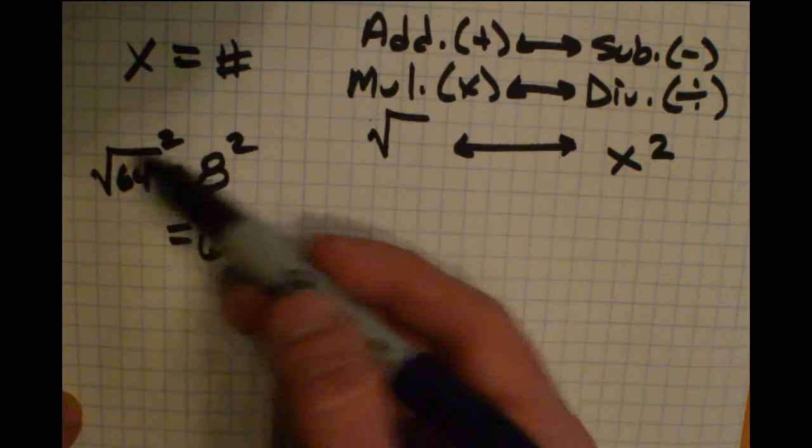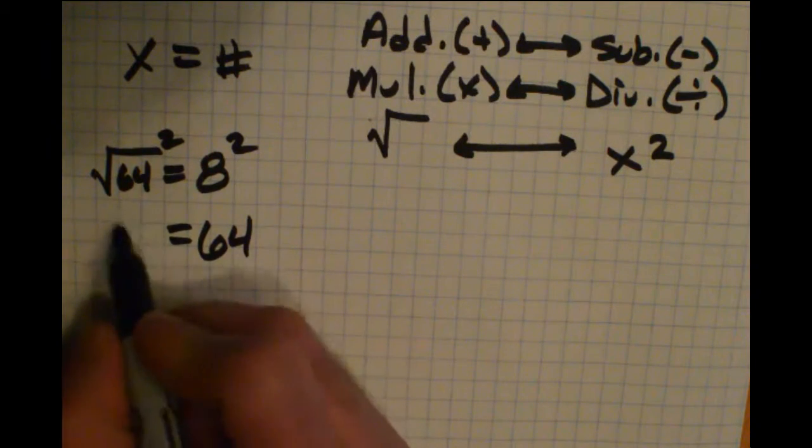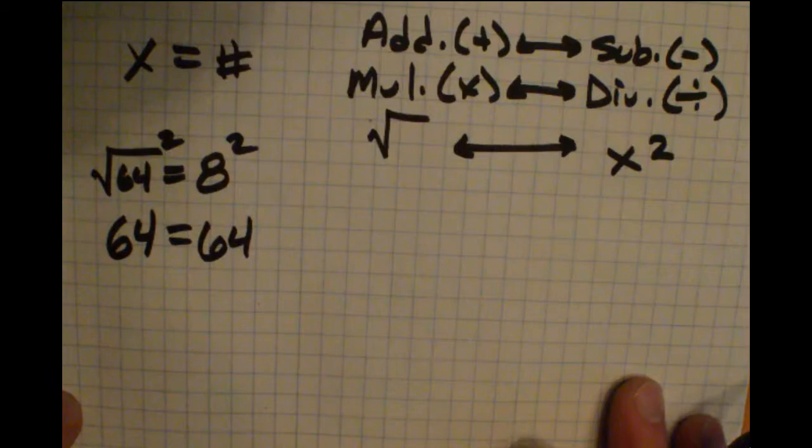And on the left side, the radical and the square, they cancel each other out. And I'm just left with what was underneath, which is a 64. And that is still obviously a true statement.